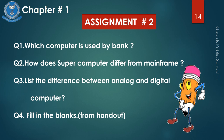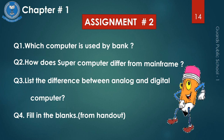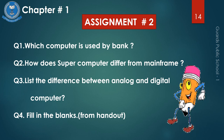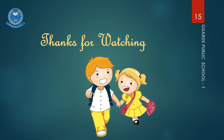This is assignment 2, so now we have a total of 2 assignments in chapter 1 on reviewing computers. Question 1: Which computer is used by banks? Question 2: How does supercomputer differ from mainframe? Question 3: List the differences between analog and digital computer. Question 4: Fill in the blanks from the handout. You can learn these questions from the handout and then rewrite them on a fullscape sheet or keep the answers in mind.